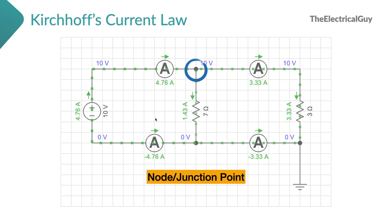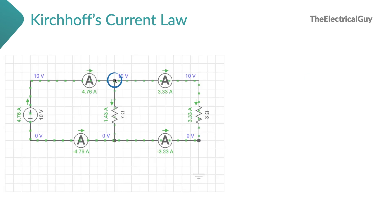It is called a junction point because we are connecting multiple elements — two or more elements — and that is the reason why it is called the node or junction point. So this point can be called a node. Considering this node as the reference, you will see there is some current incoming towards that node and some currents outgoing from that node. One current, that is 4.76 ampere, is the incoming current towards this node.